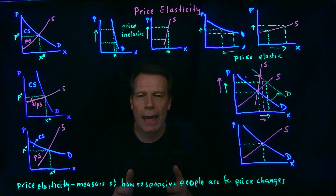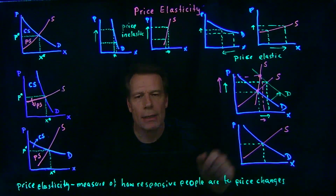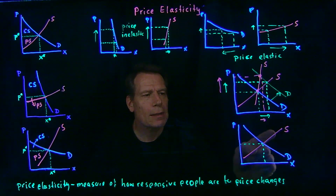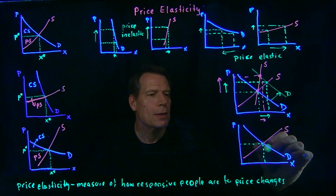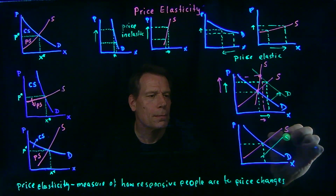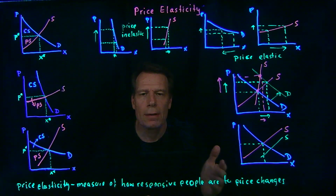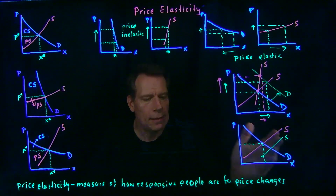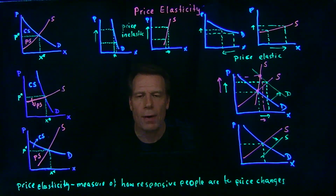Then when we add up the supply curves — which are portions of those marginal cost curves — to come up with the market supply curve, we would get a lower curve that shifts down or to the right. Or suppose that more firms enter the market; as more firms enter, we sum across more firm supply curves, and that would cause that same shift down and to the right.